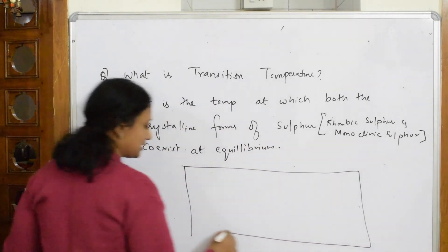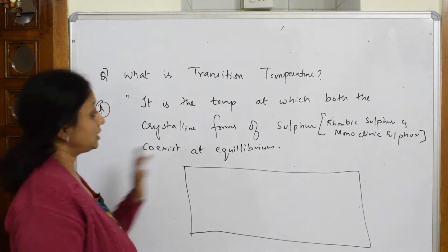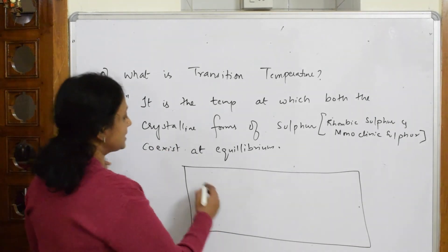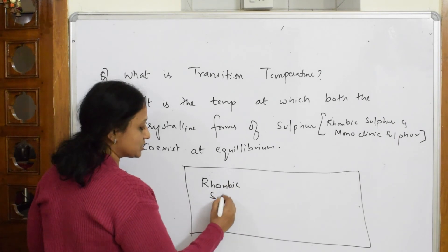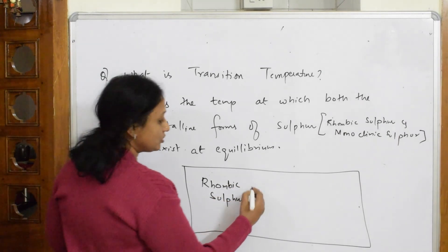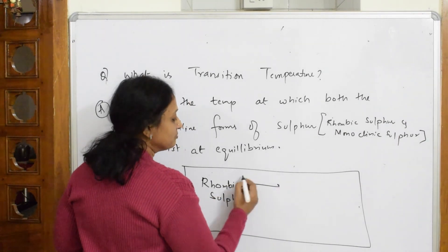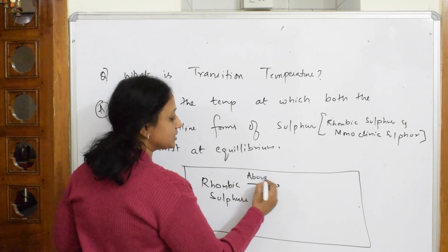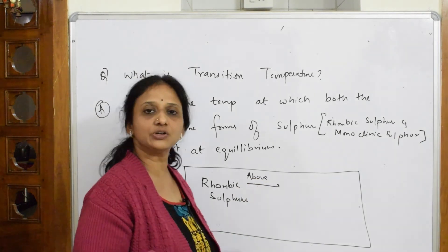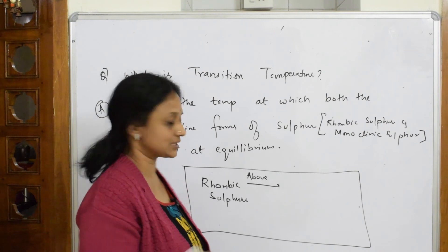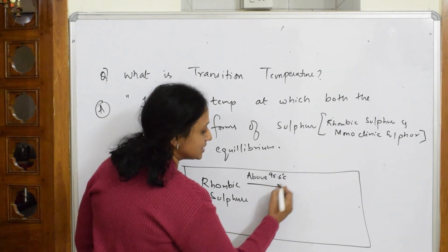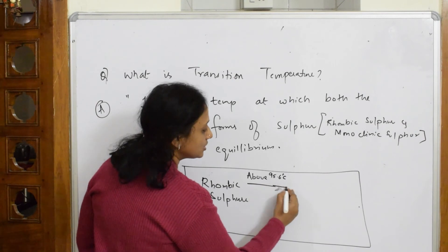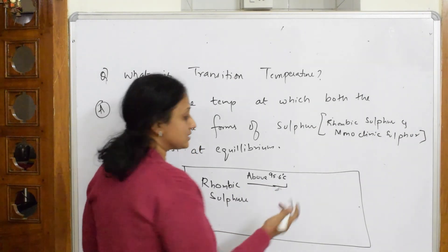Rhombic sulfur - no need to draw the structure, just mention rhombic sulfur. When you are heating it above a temperature, what is the temperature? 95.6 degrees centigrade. This is going to get converted - rhombic sulfur gets converted into monoclinic sulfur.